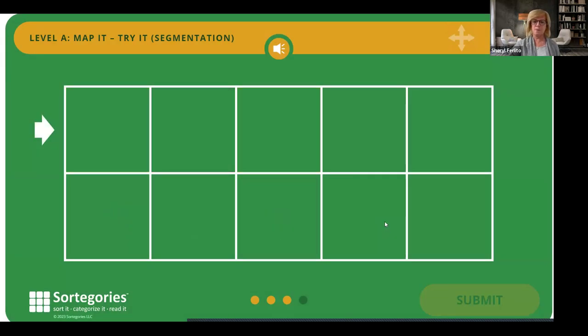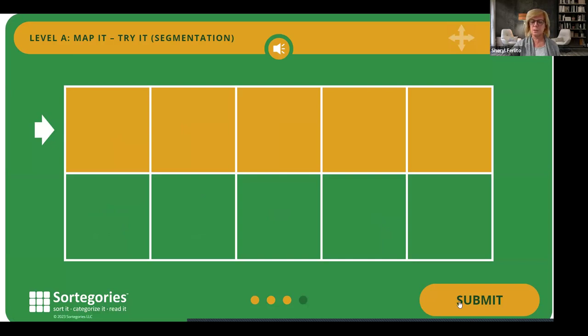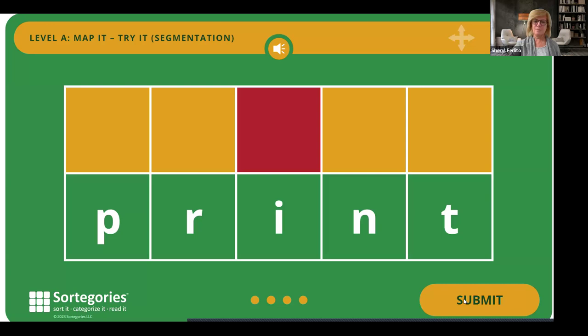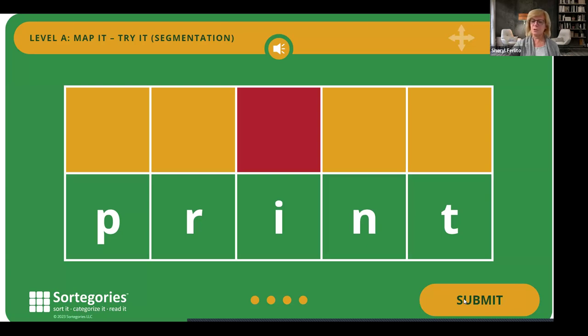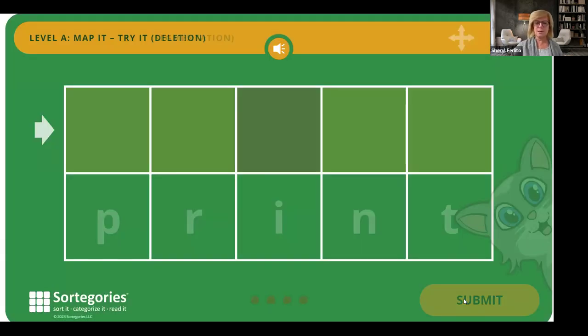The word is 'print.' Print. So I have an initial blend, p, r, i, and a final blend, n, t. Print. Print. Oh, and here's my reward. The cat comes in.